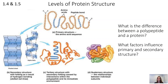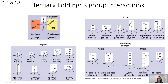Tertiary folding is determined by R group interactions. R groups can be nonpolar — you'll notice they have a lot of carbons and hydrogens — or polar, with oxygens and nitrogens, and even a sulfur in cysteine. That's why proteins include sulfur, even though not every single amino acid has a sulfur in it. In addition to nonpolar and polar R groups, there are also electrically charged R groups — acidic ones that donate hydrogens and basic ones that can accept a hydrogen.